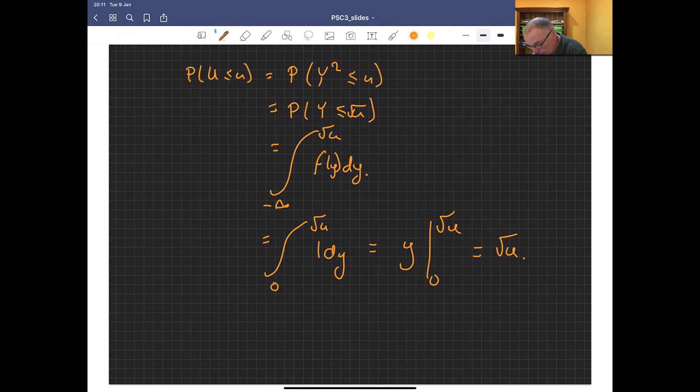So let's just finalize that. F of U equals the square root of U between 0 and 1. It's 0 for U less than 0, and it's 1 for U greater than 1. That's my complete CDF.